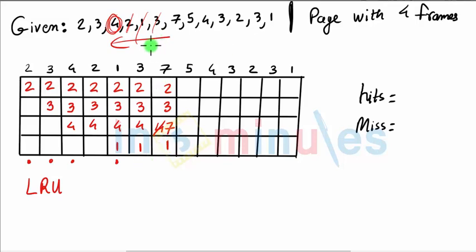Next is 5. Again, you have to see the same thing. With reference to 5, 7 has just entered, so no, I'm not going to change it. Next was 3, next was 1.